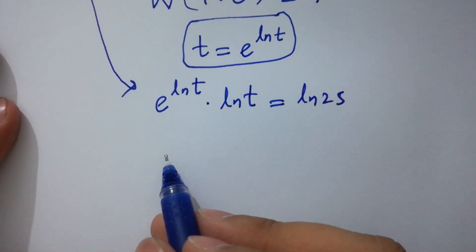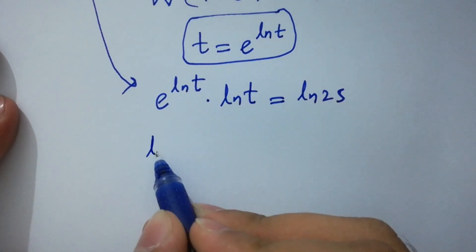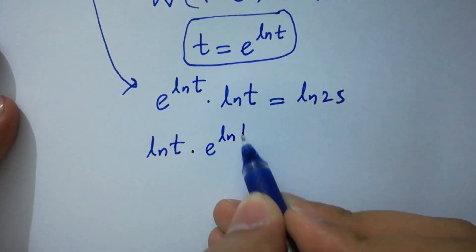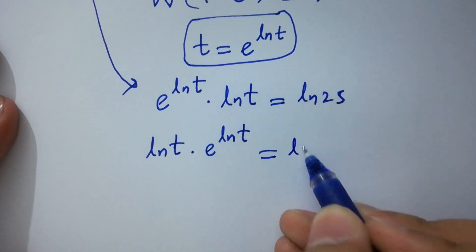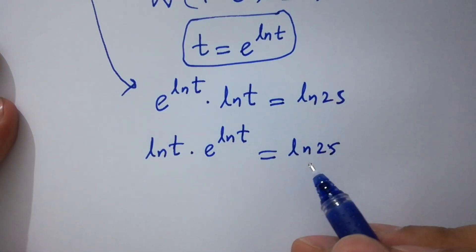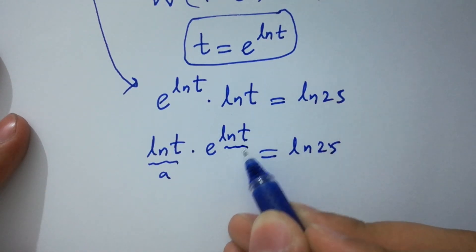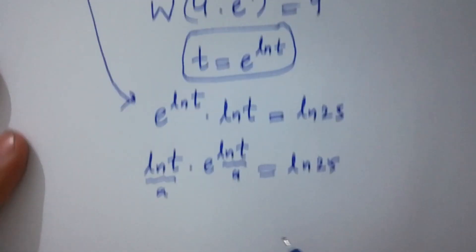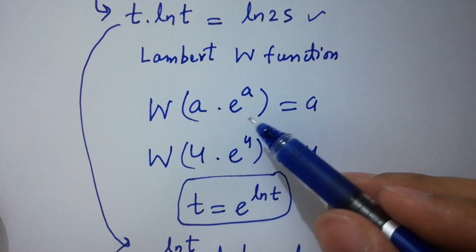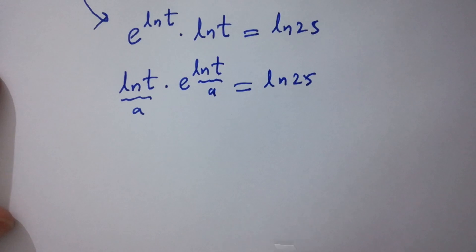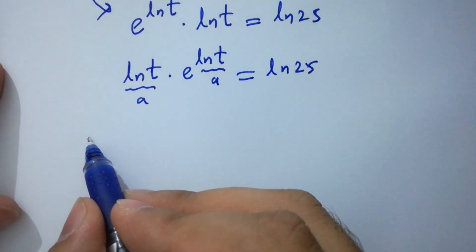It can be written as ln t times e to the power ln t equal to ln 25. So, we have this expression as a and this is also equal to a. Like a times e to the power a. So, in the next step, I am going to apply here Lambert W function.